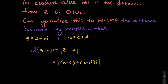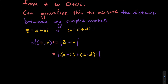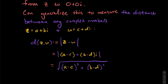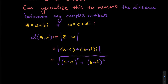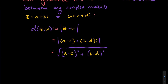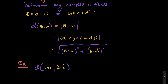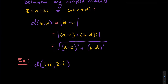Writing this out for z = a + bi and w = c + di: d(z, w) = |z − w| = √((a − c)² + (b − d)²). This is exactly the Euclidean distance formula from algebra — the difference in x-coordinates squared plus the difference in y-coordinates squared. We're just repackaging it with complex numbers.